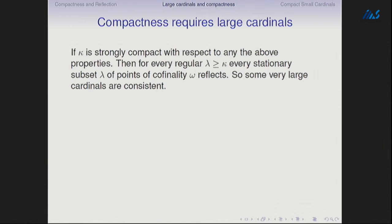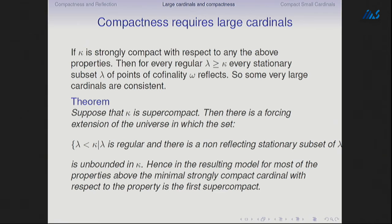This means that compactness requires — in the sense of requiring consistency of — large cardinals. If κ is strongly compact with respect to any of these properties, then for every regular λ ≥ κ, every stationary set of points of cofinality ω reflects everywhere. And that implies the consistency of some very large cardinal — probably in the order of magnitude of strong compactness. It requires failure of square everywhere, which is a very large assumption.